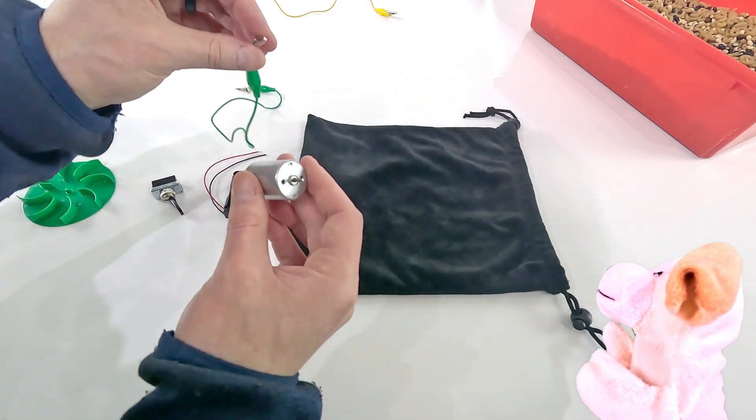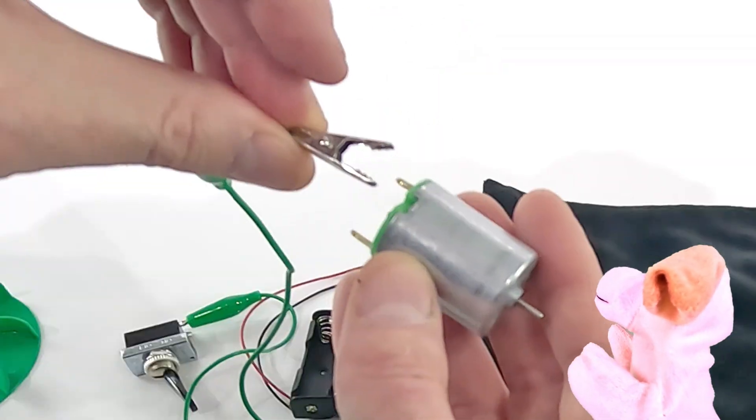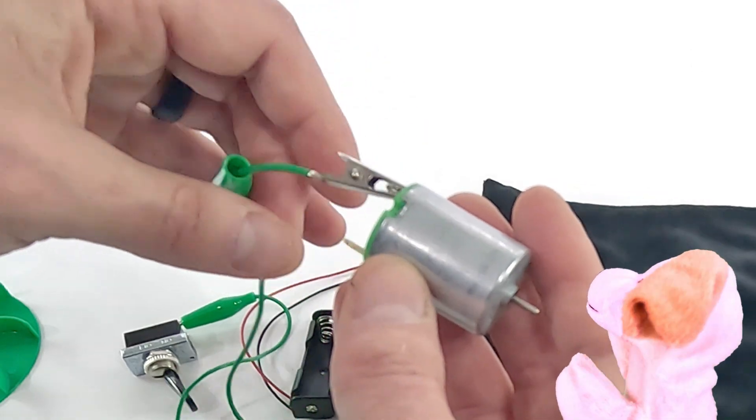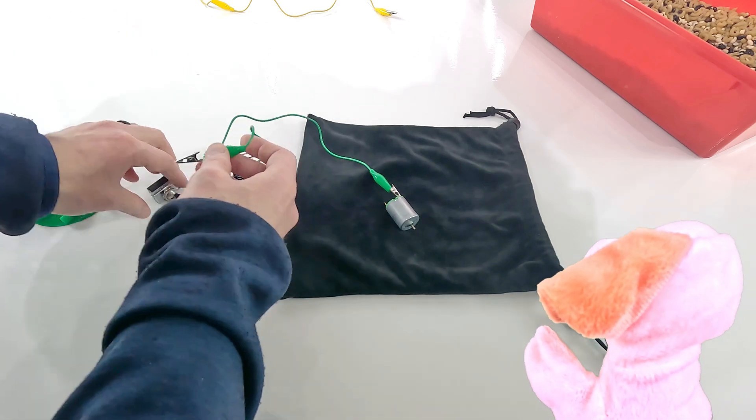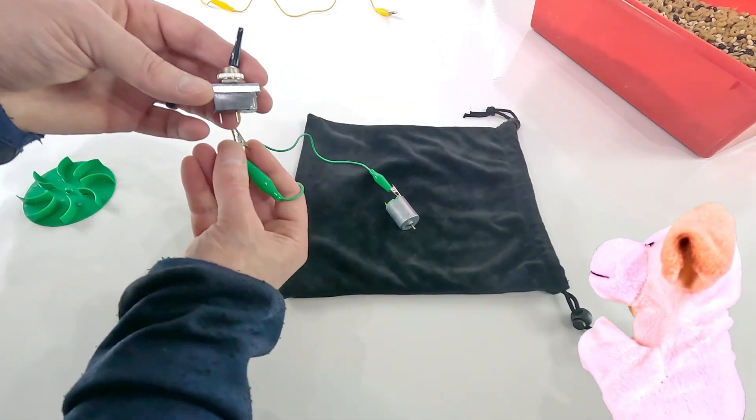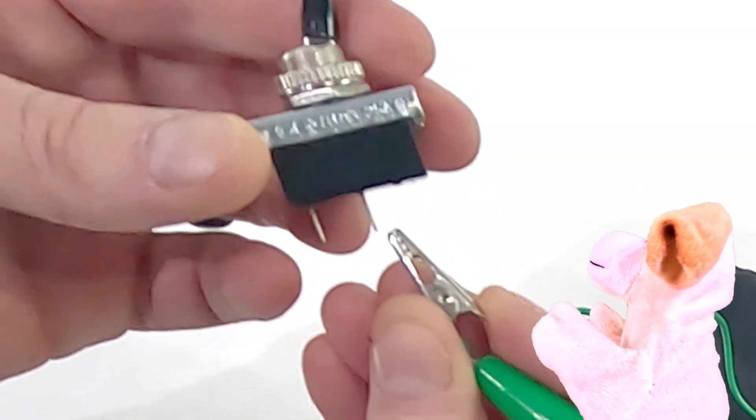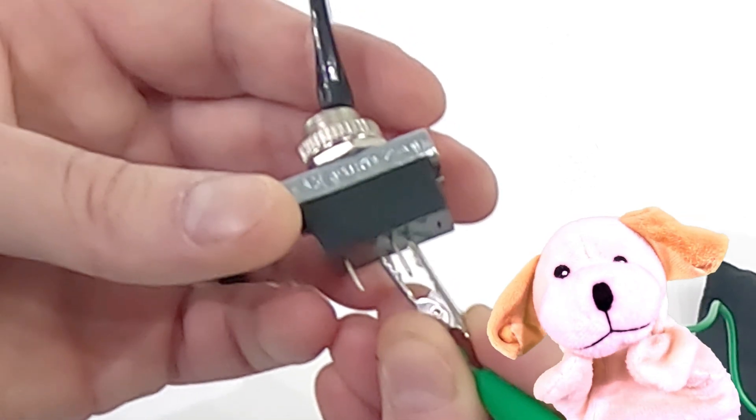So watch. I take the green wire and I'm gonna attach it to the motor. The wire color doesn't matter, I just like green. Then we take the other end of the green wire and we attach it to the next part in our circuit, and that's the switch.